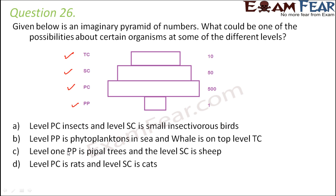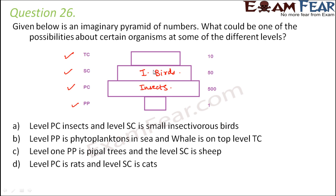Now what are the options given to us? First option is: level PC is insects and level SC is small insectivorous birds. If PC is insects, that means primary consumers are insects and secondary consumers are insectivorous birds — birds which eat insects. Is that possible? Yes, that is very much possible. If primary consumer is insects, then the secondary consumers can be insectivorous birds which feed on insects. So this is correct — this could be a possibility.